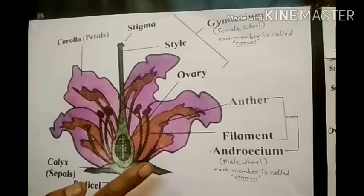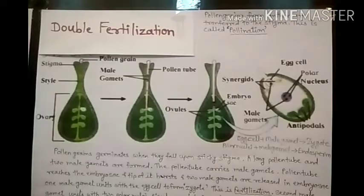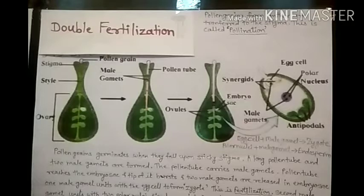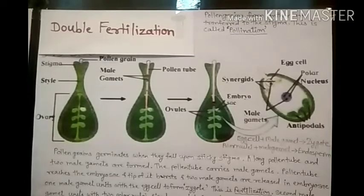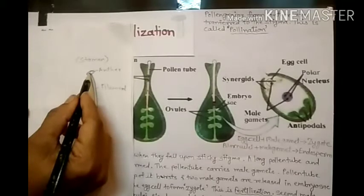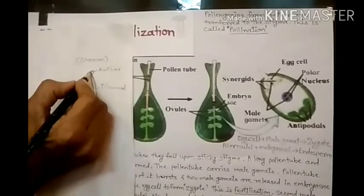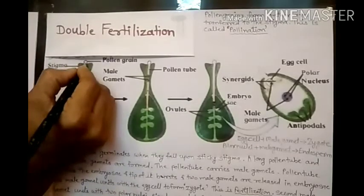After observing the parts of the flower, we will start with the fertilization process. There are four whorls: calyx, corolla, androecium, gynoecium. Androecium is the male part and gynoecium is the female part. The androecium consists of stamens. The upper part of the stamen is called the anther and the lower part is the filament. This anther contains pollen grains. Pollen grains from this anther are transferred to the stigma of the gynoecium.